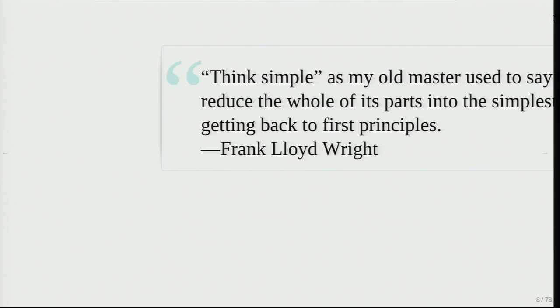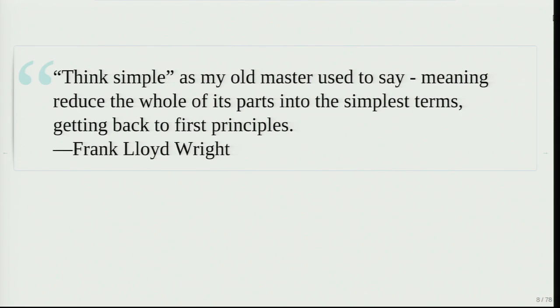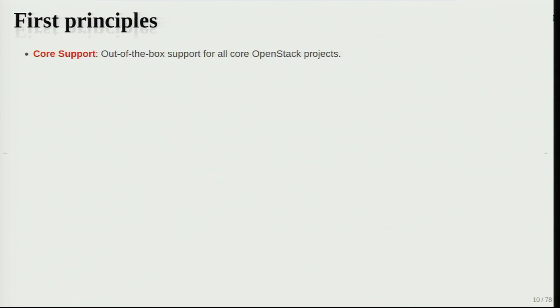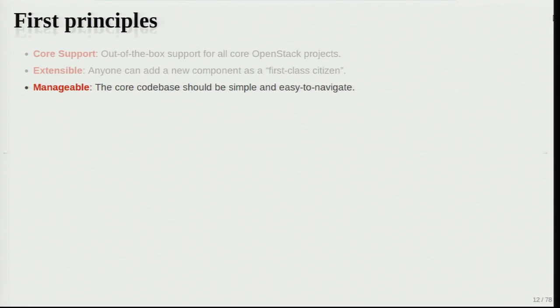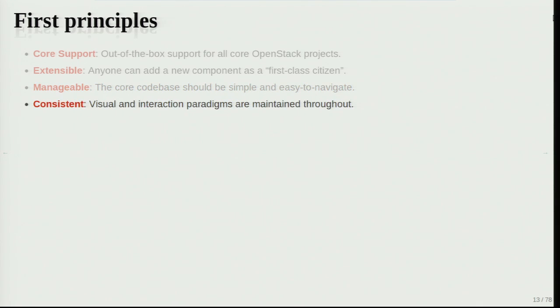Looking back to where we started in Essex, I like to take the view of principles. I really like this quote: 'think simple, as my old master used to say' — meaning reduce the whole of its parts into simplest terms, getting back to first principles. The first principles I laid out for Horizon were: core support — Horizon should have built-in, out-of-the-box support for every core project in OpenStack. It should be extensible so that not only core projects can be in Horizon, but anybody else can add their project and build on it. It should be easily manageable for developers — the core code base should be simple, easy to navigate, nothing tucked away in weird structures. It should be very consistent in presentation to the end user — all the visual design should be familiar, with no jarring changes from project to project.